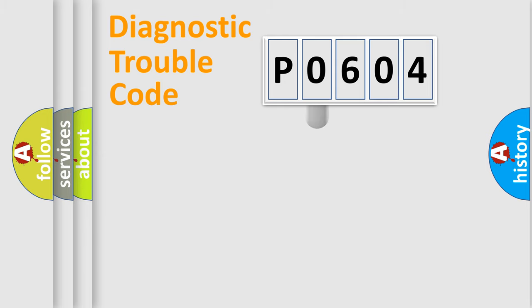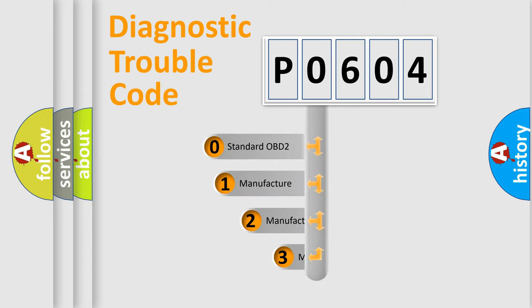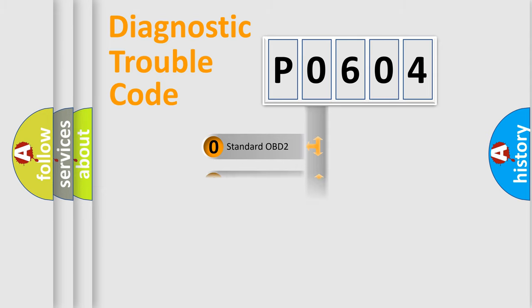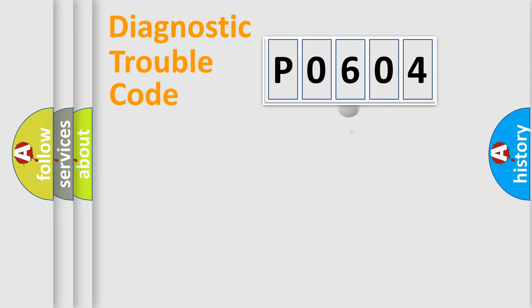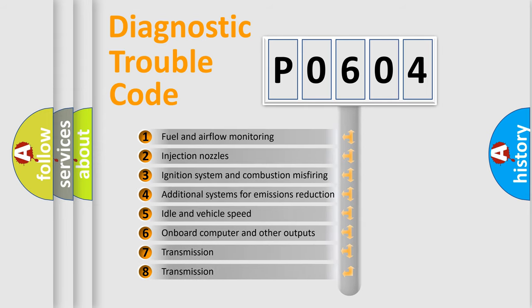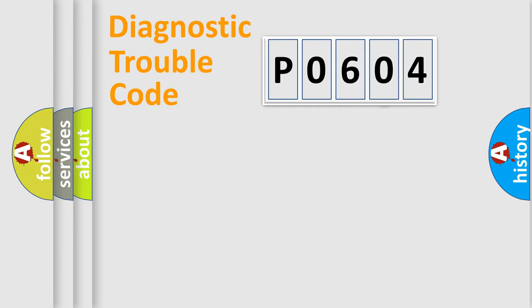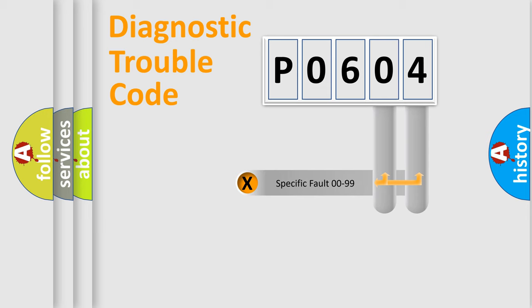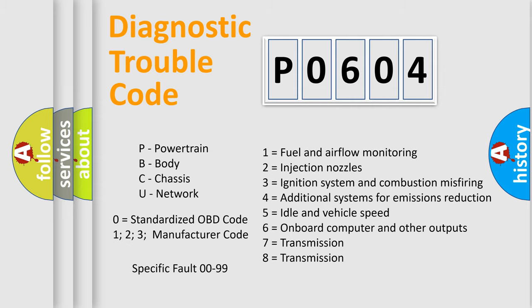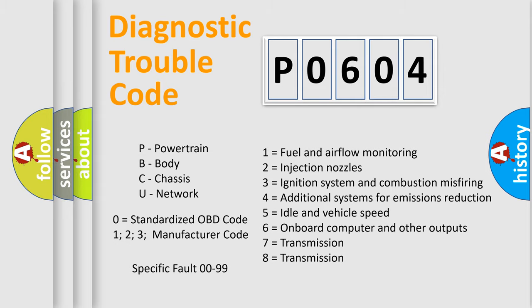This distribution is defined in the first character of the code. If the second character is expressed as zero, it is a standardized error. In the case of numbers 1, 2, or 3, it is a more specific expression of a car-specific error. The third character specifies a subset of errors. Only the last two characters define the specific fault of the group. This division is valid only if the second character code is expressed by the number zero.